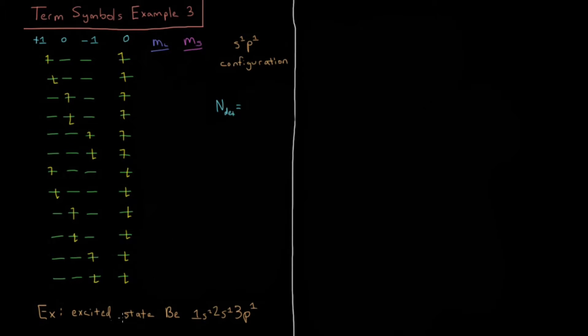Let's say for example we had some excited state beryllium atom where we took what would normally be in the ground state 1s², 2s² for beryllium's 4 electrons and we promote one of those 2s electrons up to the 3p subshell. So this is an excited state not the ground state, not the lowest energy that a beryllium atom can have.